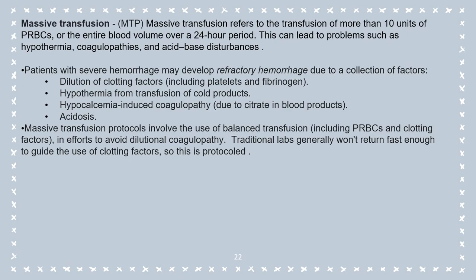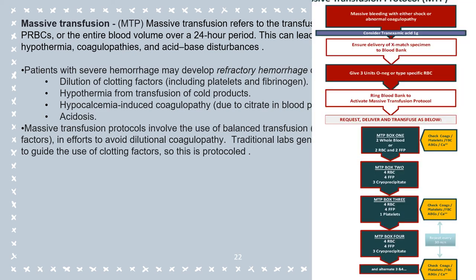Massive transfusion refers to the transfusion of more than 10 units of packed red blood cells or an entire blood volume over a 24-hour period. This can lead to problems such as hypothermia, coagulopathies and acid-base disturbances. Patients with severe hemorrhage may develop refractory hemorrhage due to dilution of clotting factors, hypothermia from transfusion of cold products, hypocalcemia-induced coagulopathy and acidosis. On the following slide you will watch a video about the Massive Transfusion Protocol.